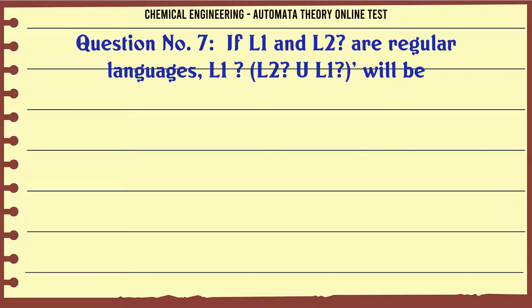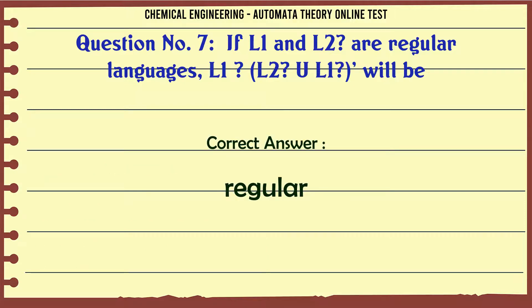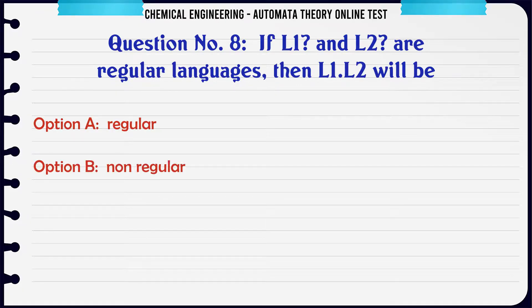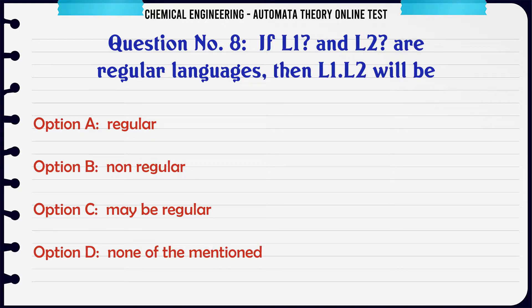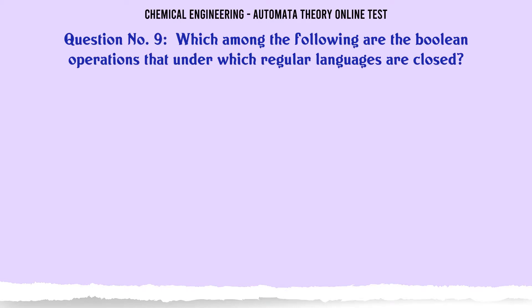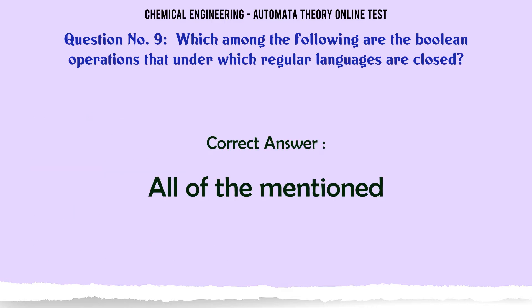If L1 and L2 are regular languages, L1 ∩ L2 ∪ L1 will be: A. Irregular, B. Non-regular, C. May be regular, D. None of the mentioned. The correct answer is: Regular. Which among the following are the boolean operations under which regular languages are closed? A. Union, B. Intersection, C. Complement, D. All of the mentioned. The correct answer is: All of the mentioned.